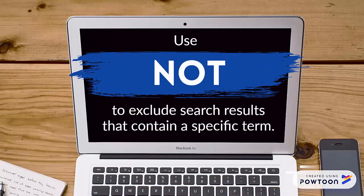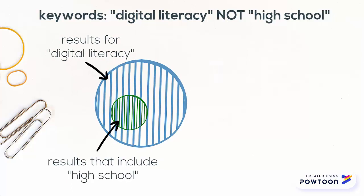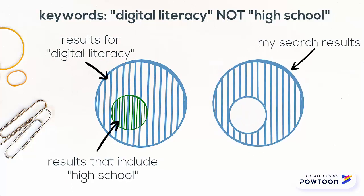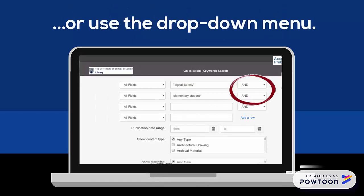You also have the option to use the third Boolean operator, NOT, to exclude search results that contain a specific term. For instance, if I wanted to find information to answer my research question, I may decide to use NOT high school. Whichever Boolean operator you are using, just remember to type the term in all caps, or use the drop-down arrow at the end of the row to select the right one.